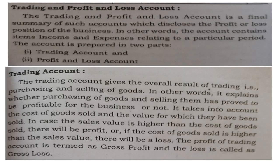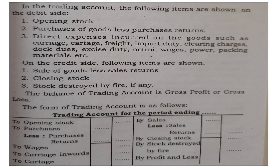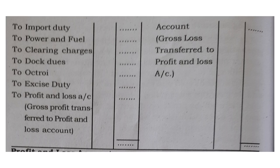In case the sales value is higher than the cost of goods sold, then it will be a profit. If sales are less than the cost of goods sold, the opposite is a loss. The profit of the trading account is termed as gross profit. In the trading account, the following items are shown on the debit side: opening stock, purchases of goods less purchase return, wages, carriage inwards and cartage. And on the credit side: sales less sales return, closing stock, stock destroyed by fire. The difference amount is gross profit or gross loss.